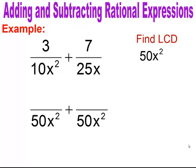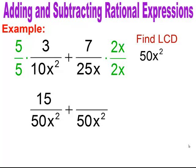I need to convert both fractions to have a common denominator of 50x squared. For the first fraction, 3 over 10x squared, I already have x squared, so I multiply by 5 to get 50, giving me 15 over 50x squared. For the second rational expression, I don't have x squared or 50, so I multiply top and bottom by 2x to get 50x squared, ending up with 14x over 50x squared.